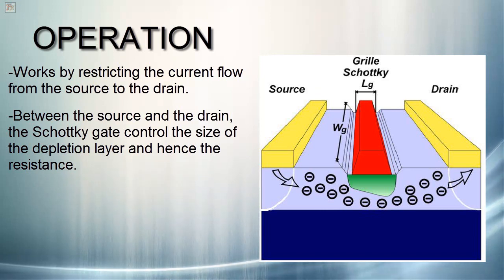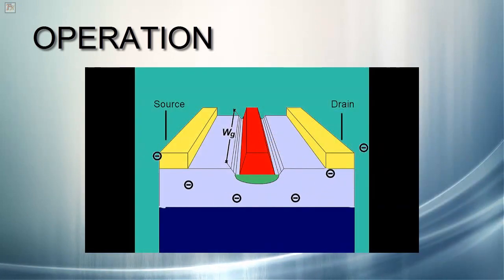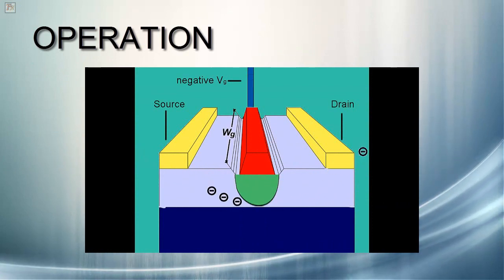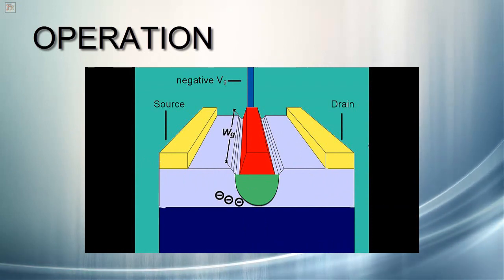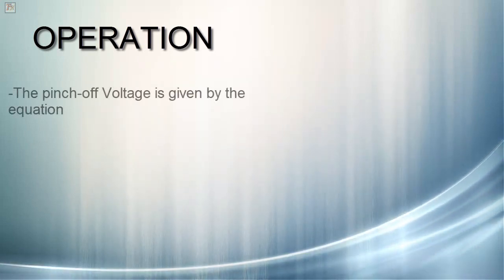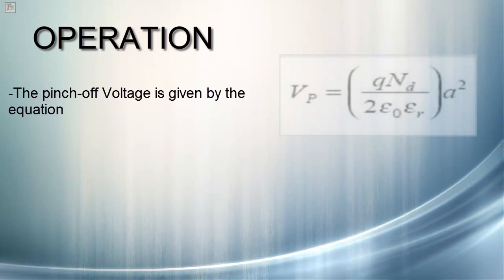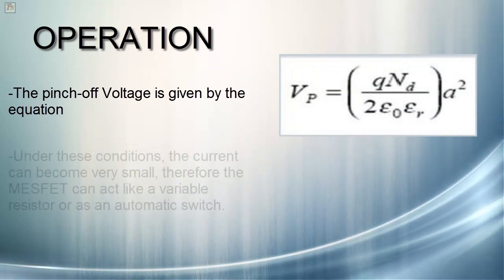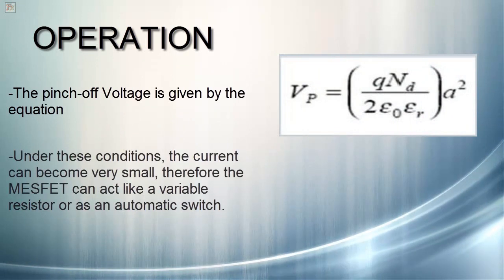This will change the amount of electrons that can flow across the gate. If a large enough negative gate bias is applied, the depletion region depth will equal the channel depth, or the channel will be pinched off. The pinch-off voltage is given by this equation. Under these conditions, the current becomes very small. Therefore, a MESFET can function as a variable resistor or as an automatic switch.